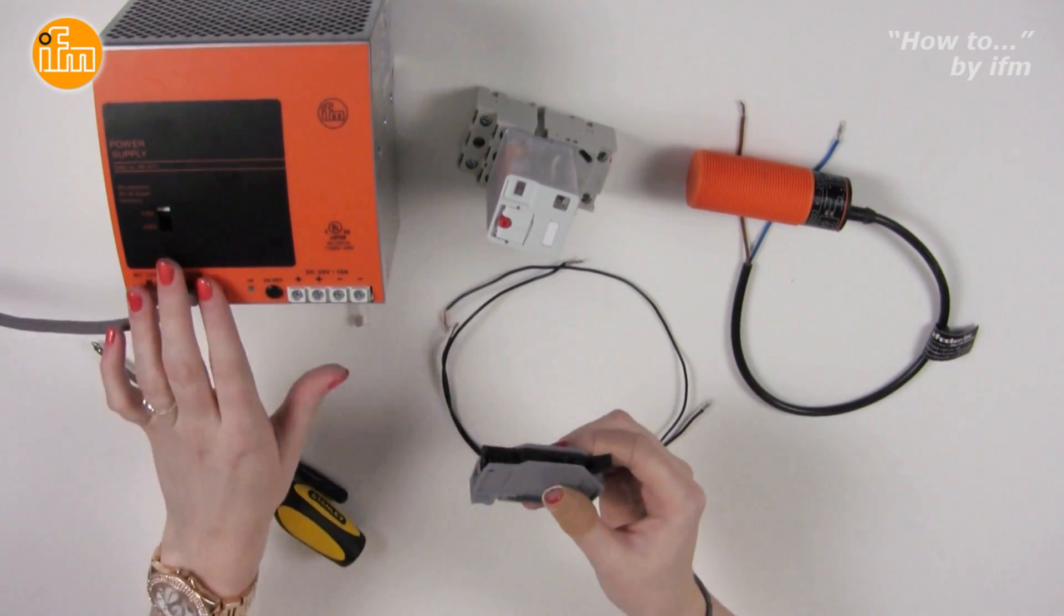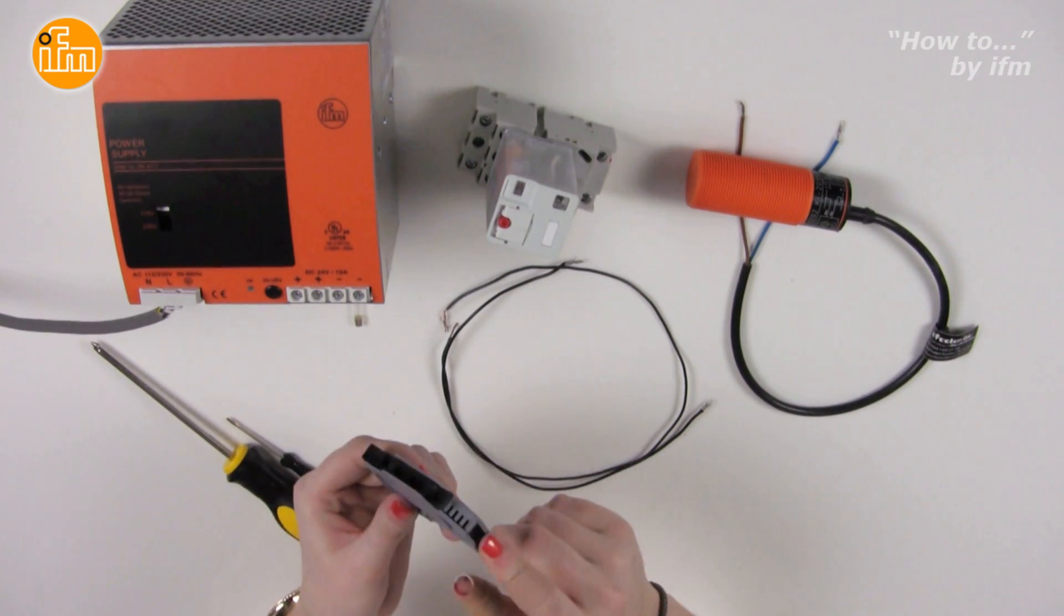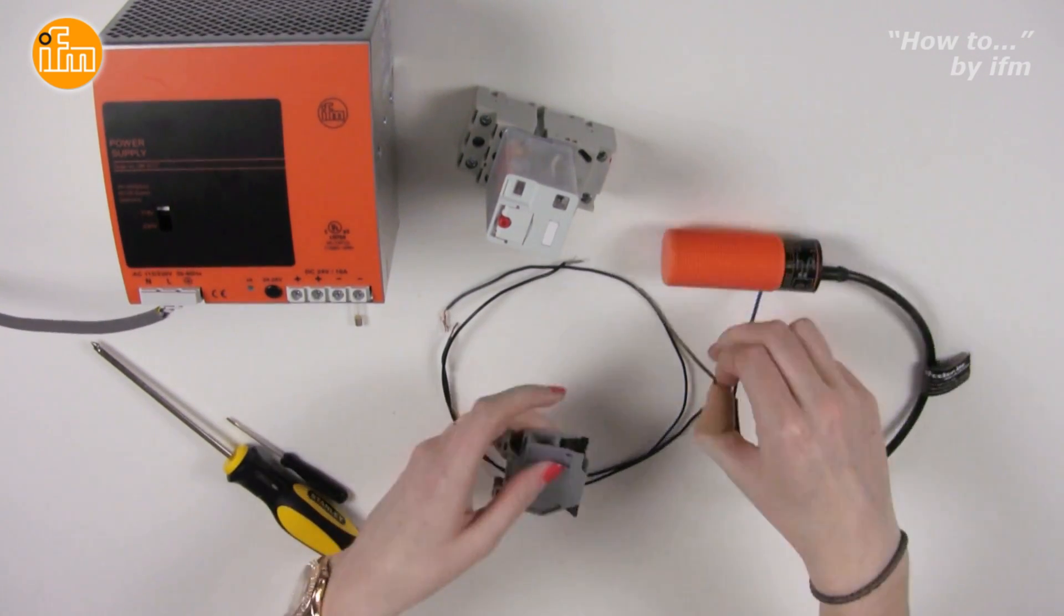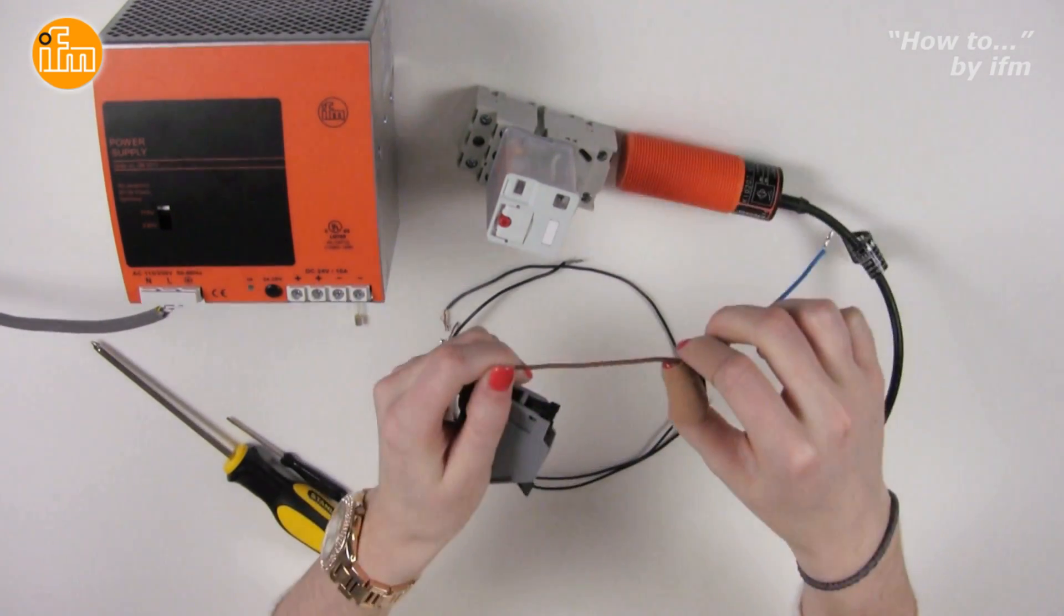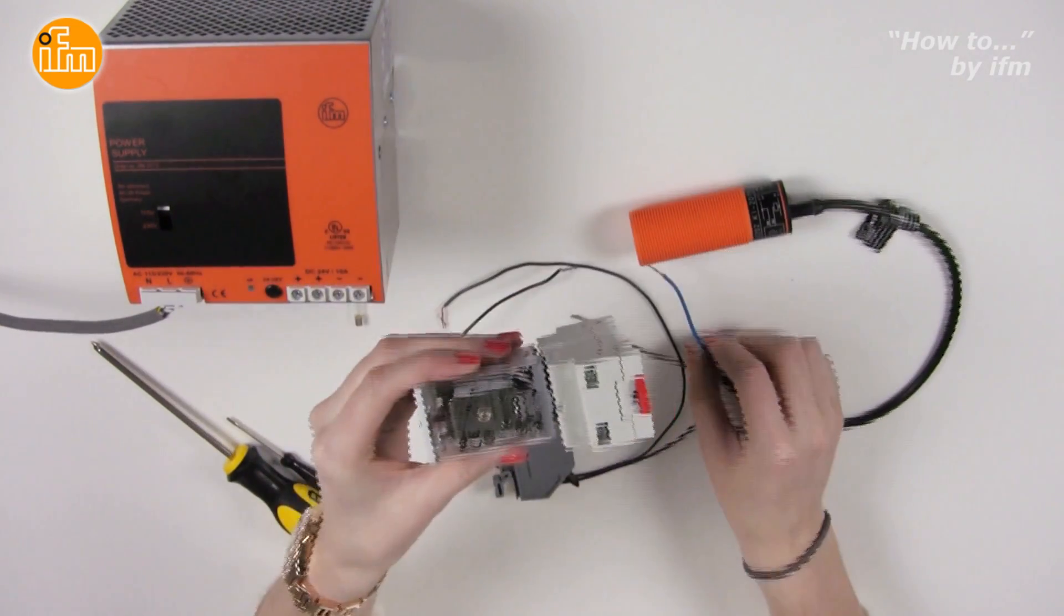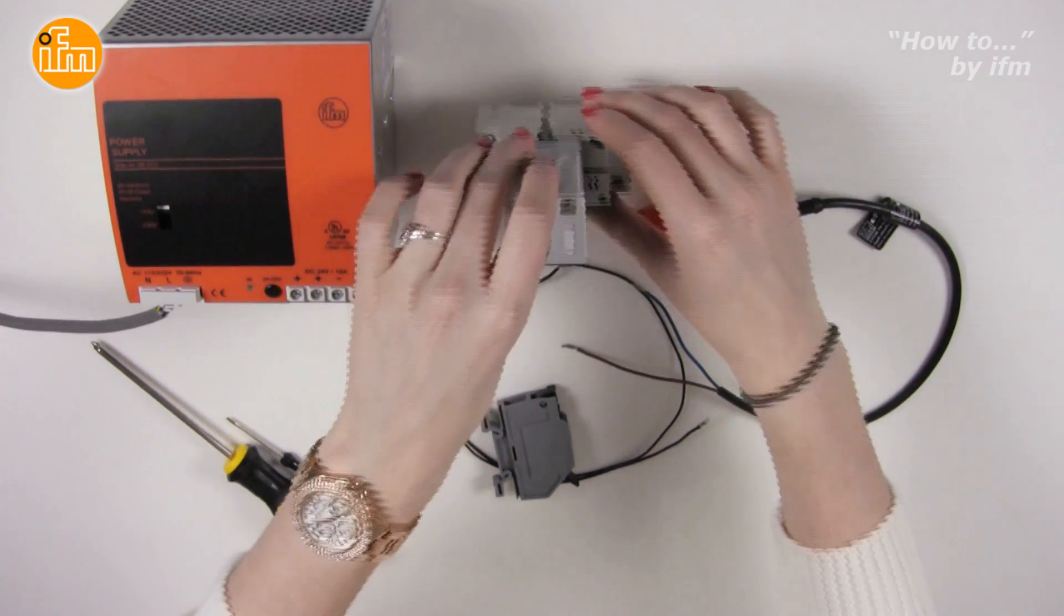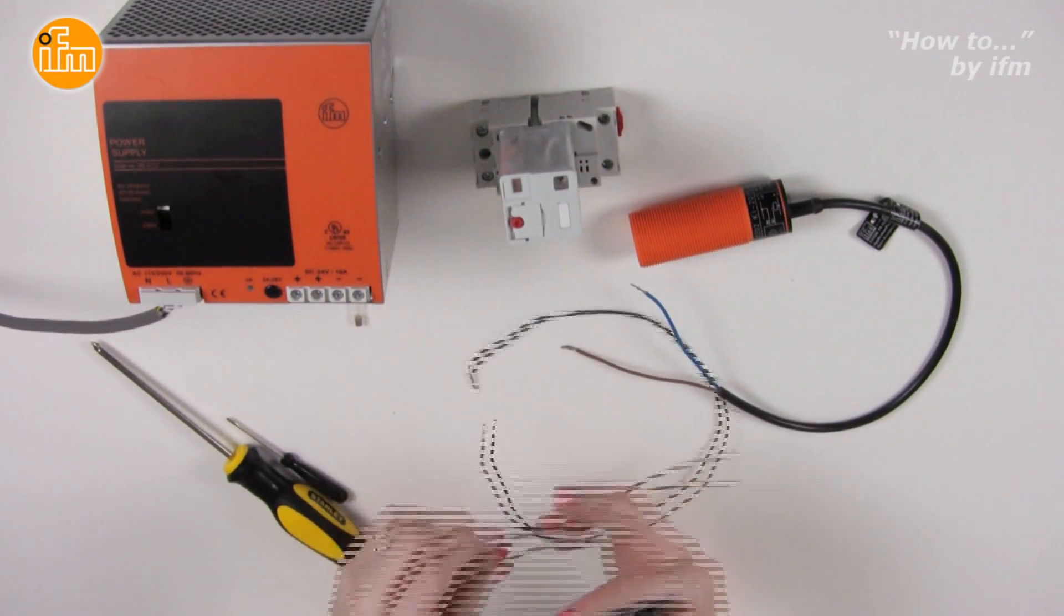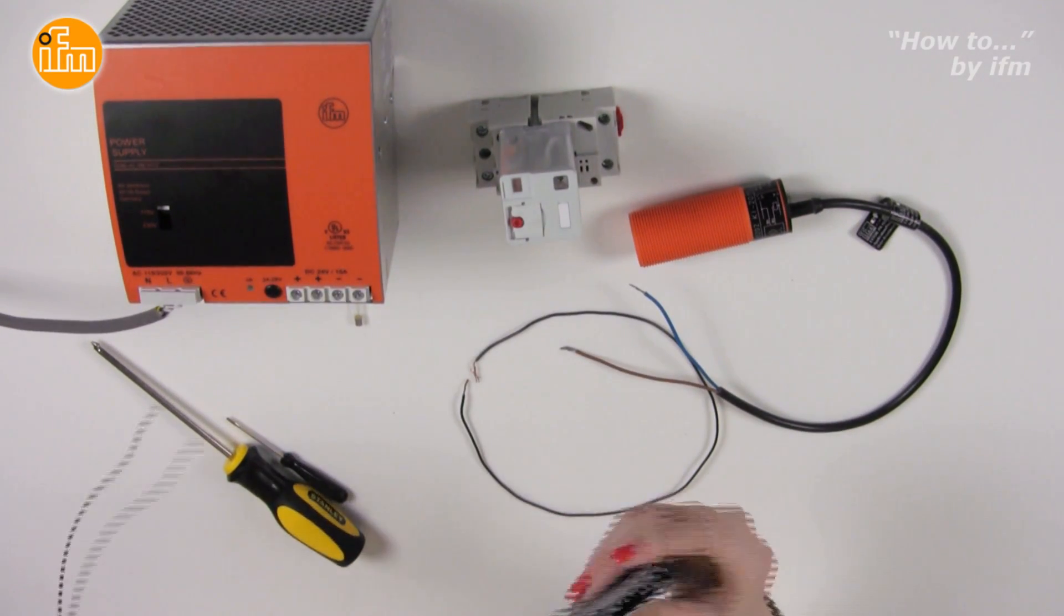The fuse should be on the hot side of the sensor, therefore the wiring will be from the L terminal, live or hot, of the power supply to the fuse. Next, the fuse is connected to the brown wire of the sensor, then the blue wire of the sensor will go to the relay, and then the relay will go back to the end terminal, neutral, of the power supply to complete the circuit.